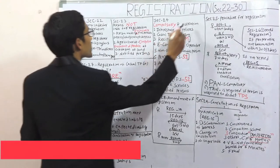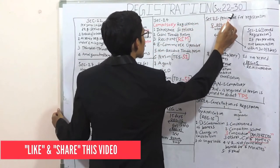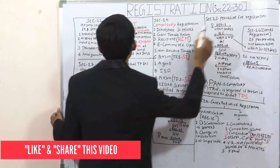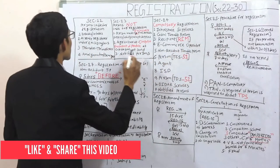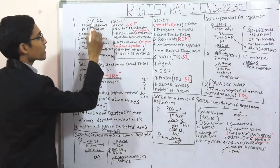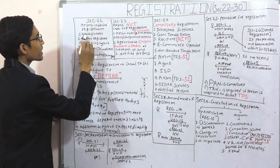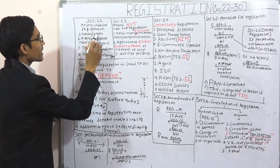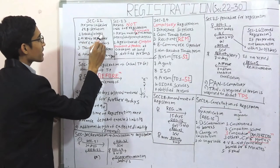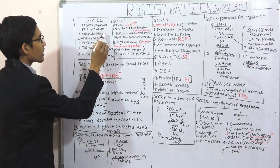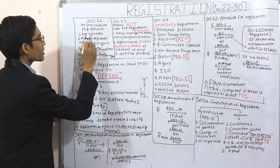Registration is covered under section number 22 to section number 30 of the CGST Act. Section number 22 — persons liable for registration. If the aggregate turnover of a person exceeds 20 lakhs, or 10 lakhs in special category states except Jammu and Kashmir, where 20 lakhs is applicable.